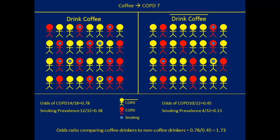The problem is: when looking at the association between coffee drinking and COPD, we see higher odds of COPD among coffee drinkers — but is that due to their coffee drinking, or due to the fact that there are more smokers among them? How do we distinguish whether the higher odds of COPD in the coffee-drinking group is due to coffee or due to smoking?